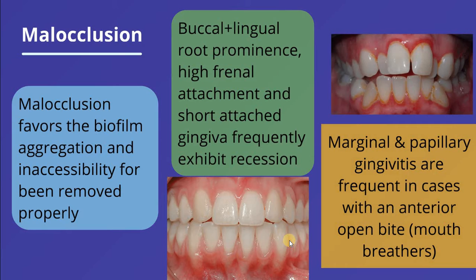For example, malocclusion favors biofilm aggregation and makes it inaccessible to be removed properly. In cases of buccal and lingual root prominence, high frenal attachment, and short attached gingiva, recession frequently occurs. There will also be marginal and papillary gingivitis in cases of anterior open bite or in cases of mouth breathers.